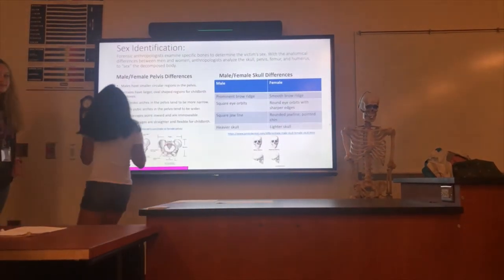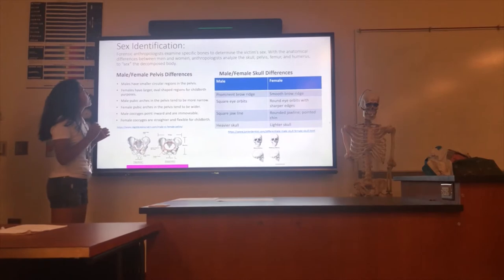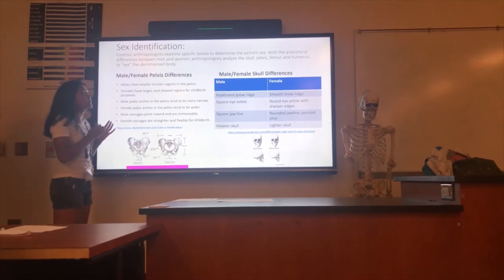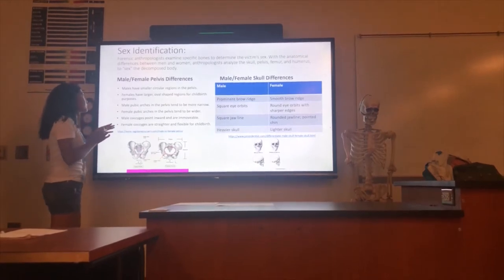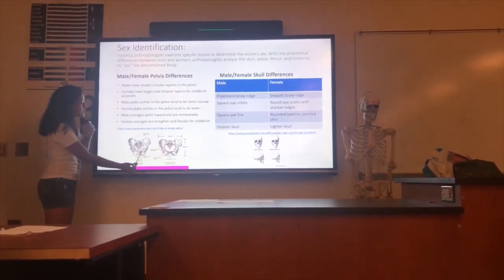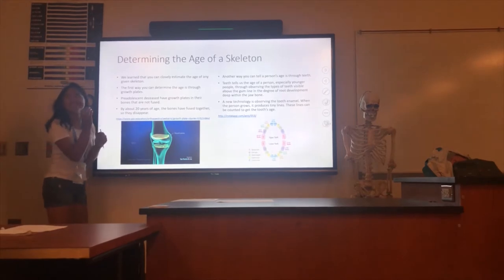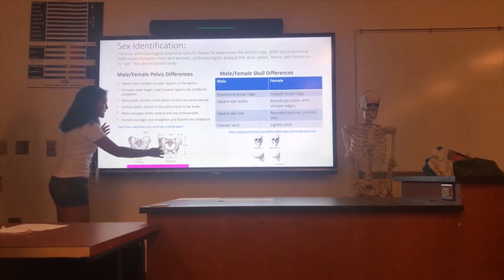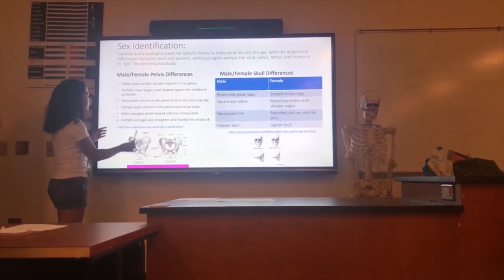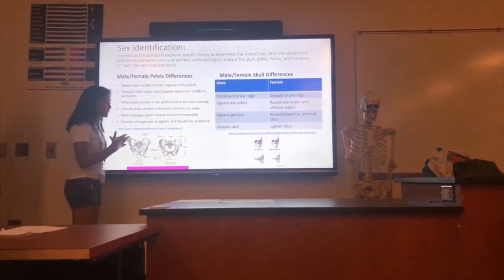Sex identification. Forensic anthropologists examine specific bones to determine the victim's sex. With the anatomical differences between men and women, anthropologists are able to analyze the skull, pelvis, femur, and humerus to sex the decomposed body. Males have smaller circular regions in the pelvis, while females have larger oval-shaped pelvic regions — that way they can carry children. The male pubic arches in the pelvis tend to be more narrow, while the female ones are much wider, again for childbirth.